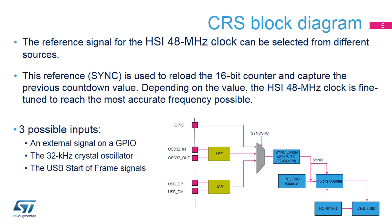Three different sources can be selected for the clock recovery system: an external signal on a GPIO, the 32 kHz crystal, or the USB start-of-frame signals. These can be used as a clock source to create a reference signal to calibrate the HSI 48 MHz oscillator.